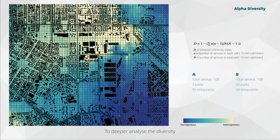To deeper analyze the diversity based on the number of services and find the difference between cells, alpha diversity is introduced. It is calculated by the Simpson Diversity Index and shows the heterogeneity of different services in one cell. The lower the value, the lower heterogeneity is, which means the more balanced each kind of amenity is. Again, we take cell A and cell B as examples, even if they are accessible to the same number of services, but the type of services in cell B is more balanced, resulting in a lower index value.